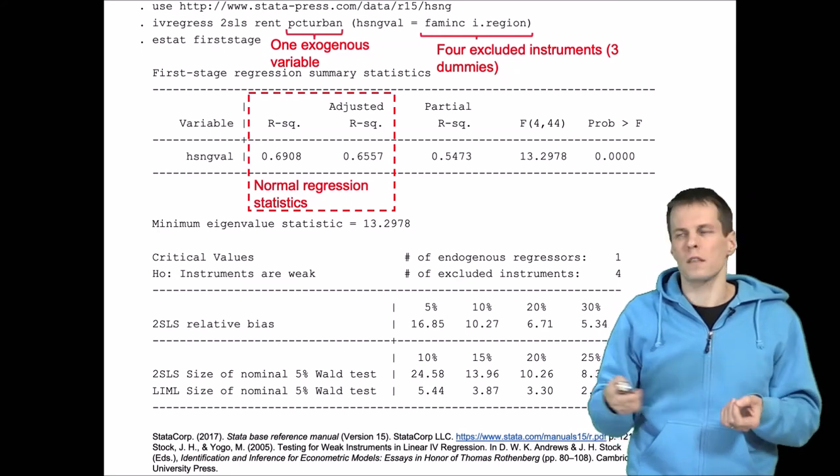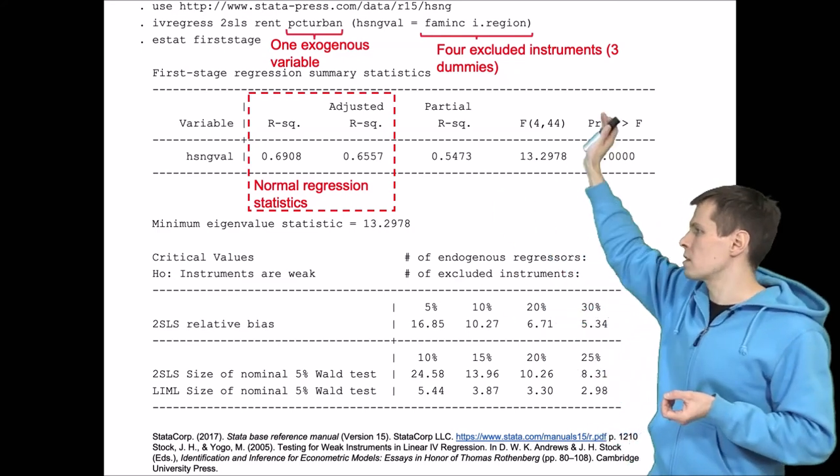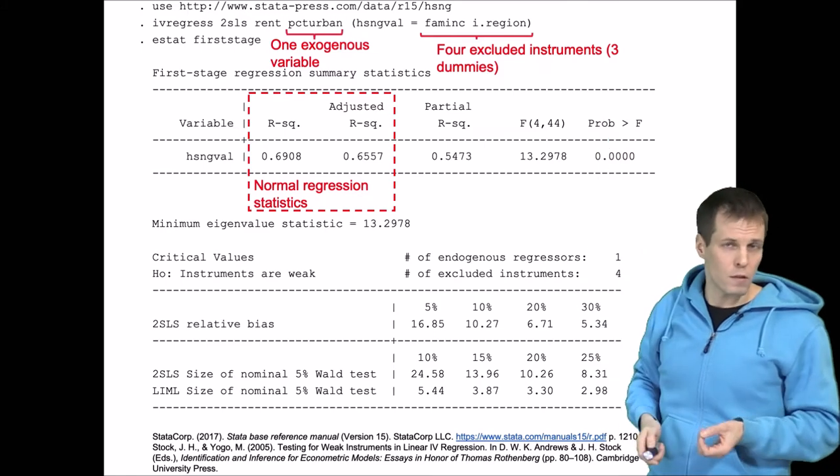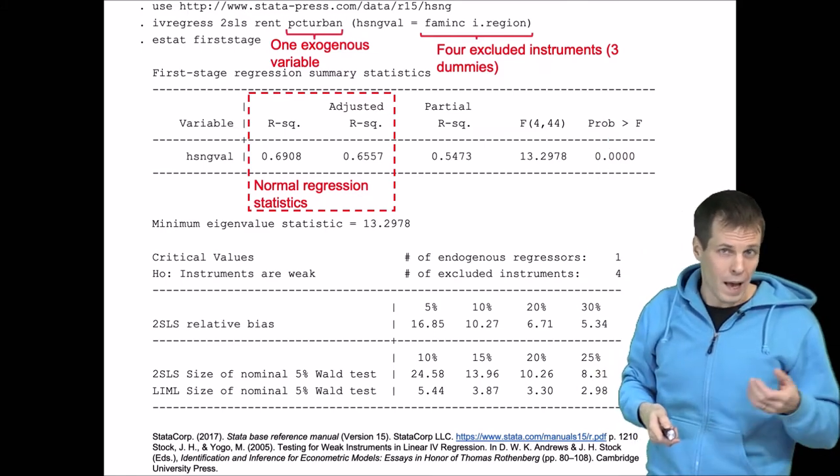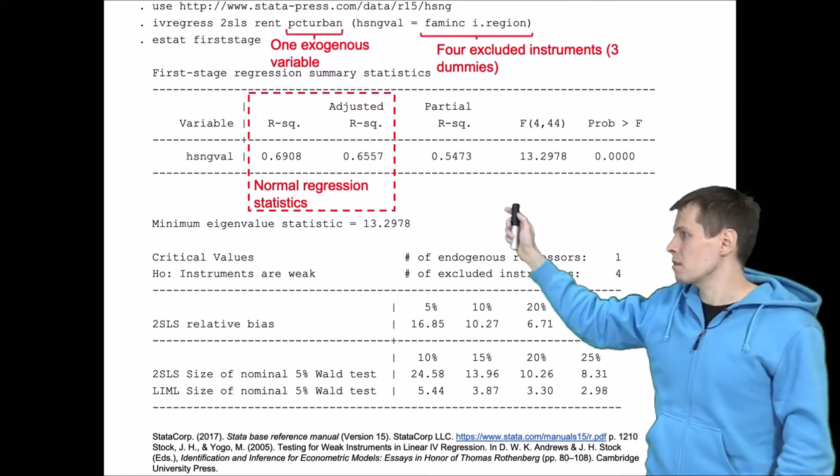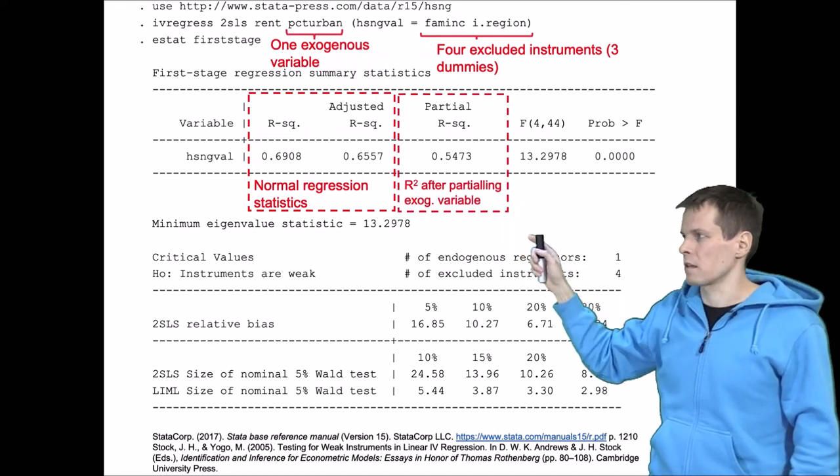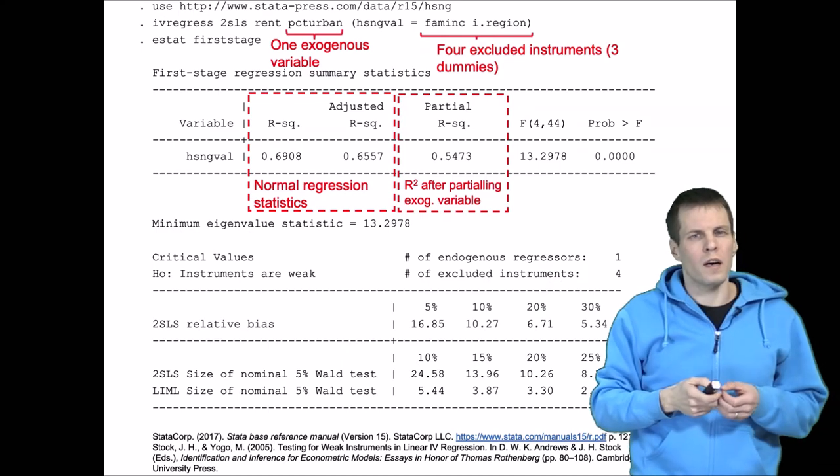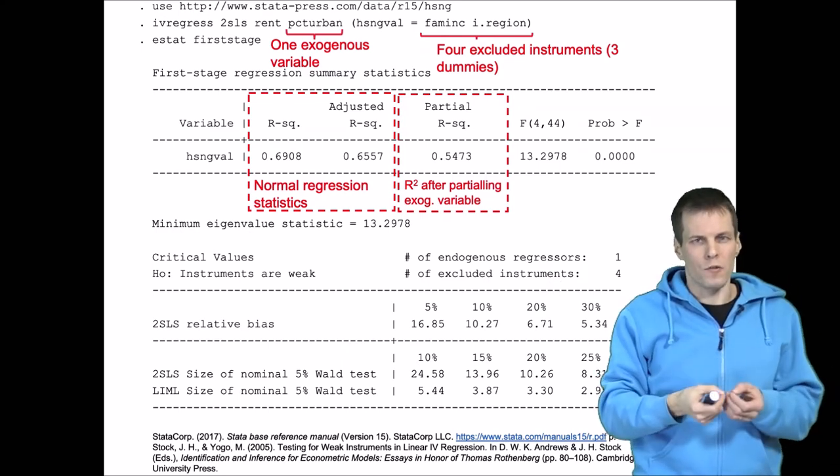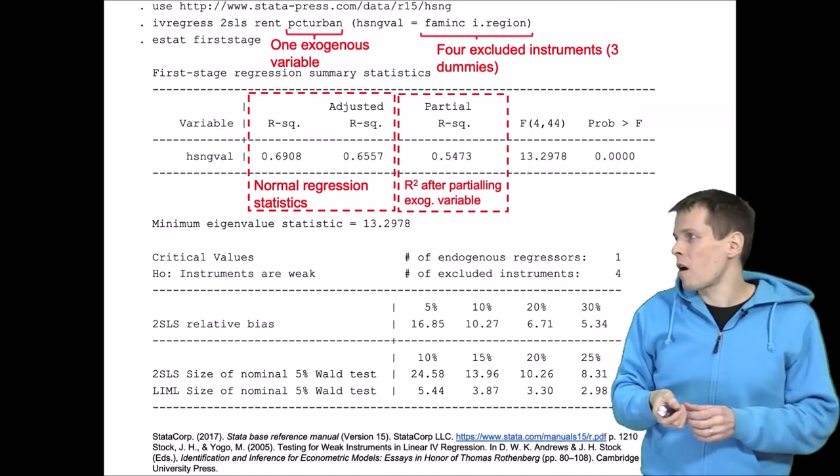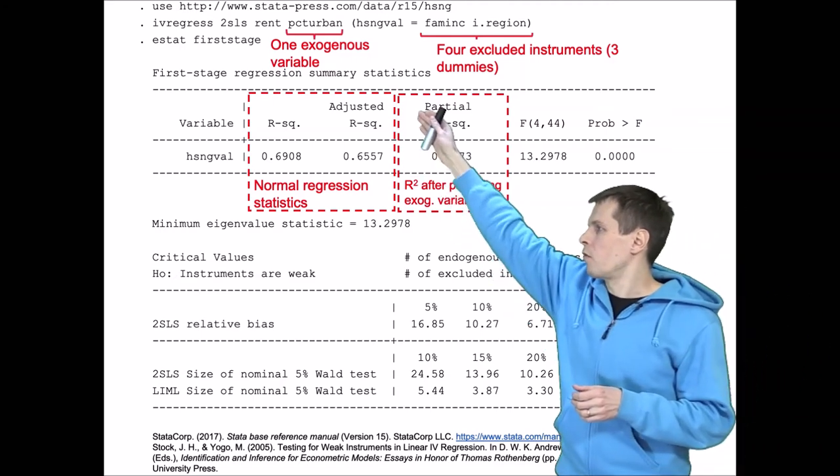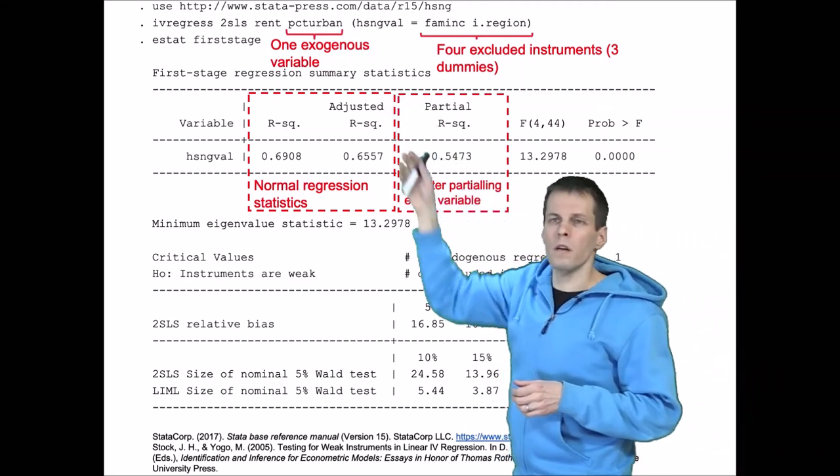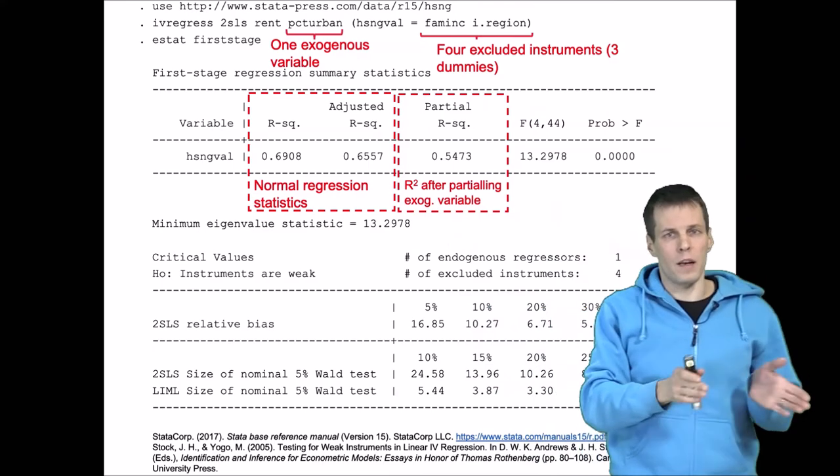So what we need to know is how much more information these excluded instruments or the instrumental variables add to the model, and that's what the partial R-square tells us. This partial R-square tells us what is the R-square of the instruments after we have partialed out the effect of percent urban from instruments and the dependent variable.